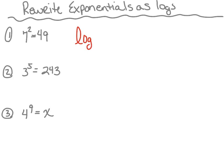We'll start with log. We're going to need a base, and the base for this log is going to be 7 — that's this number right here. Next to that 7, we'll go ahead and put the argument. The argument in this case is 49, that's this number right here. And it's going to equal to the exponent, which in this case is 2. So we read this as log base 7 of 49 is equal to 2.